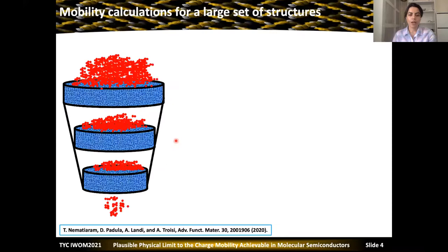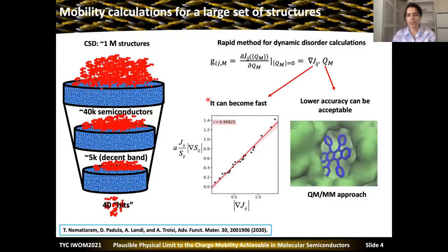Having this theory, in a recent project we screened the Cambridge Structural Database containing over one million crystals. We identified molecular semiconductors and computed charge transfer integrals for all of them. In the second layer of screening, by reducing to those with decent band gaps, we ended up with 5,000 structures and computed local and non-local electron-phonon coupling and charge mobility for all of them. The most challenging part was the method we developed for dynamic disorder calculation.